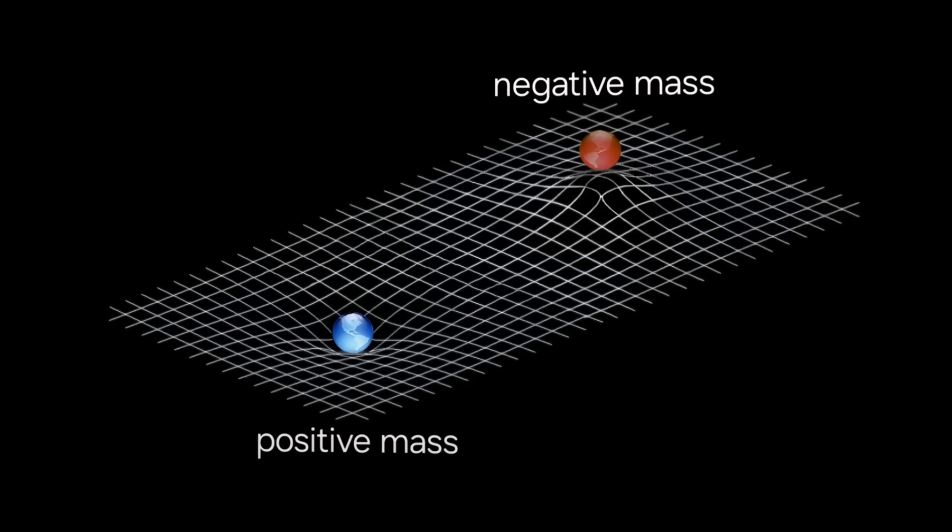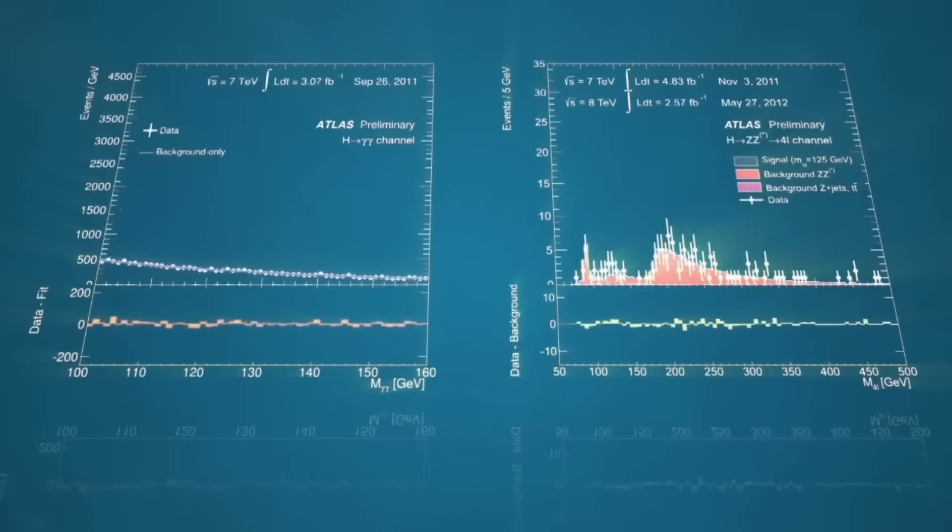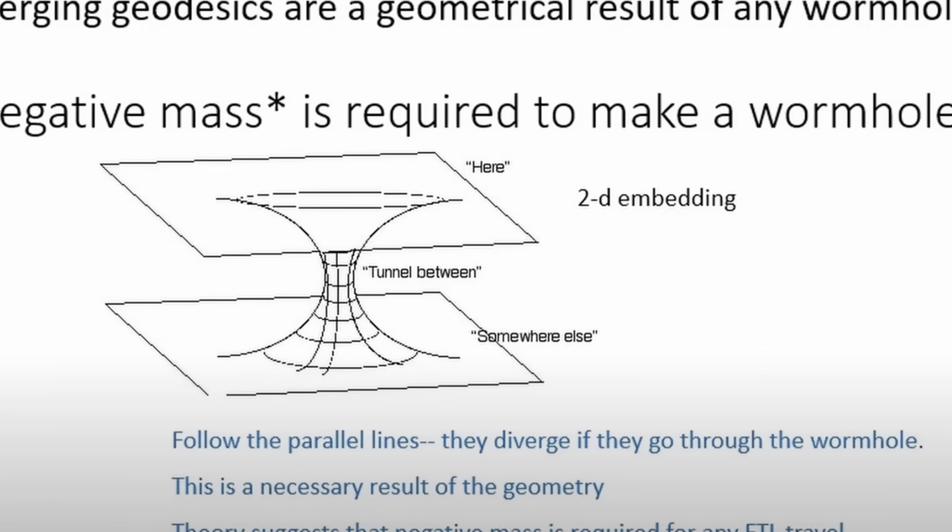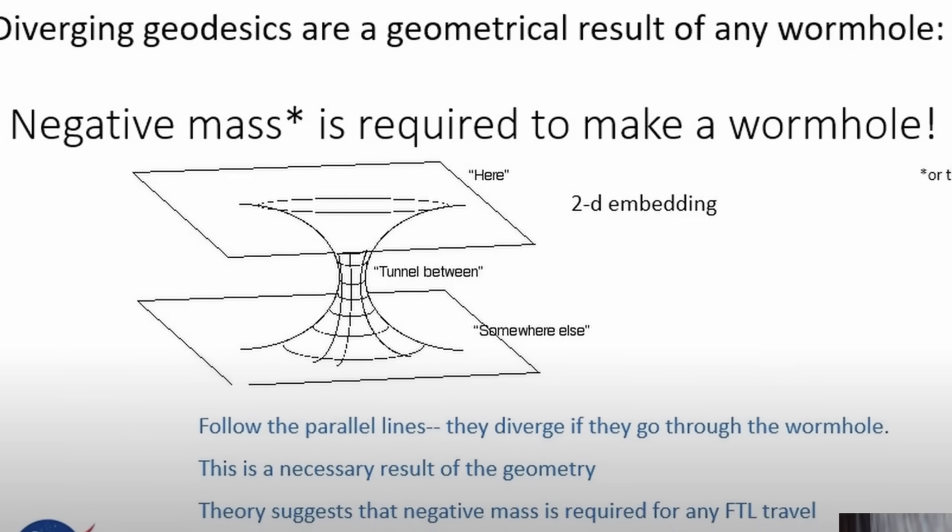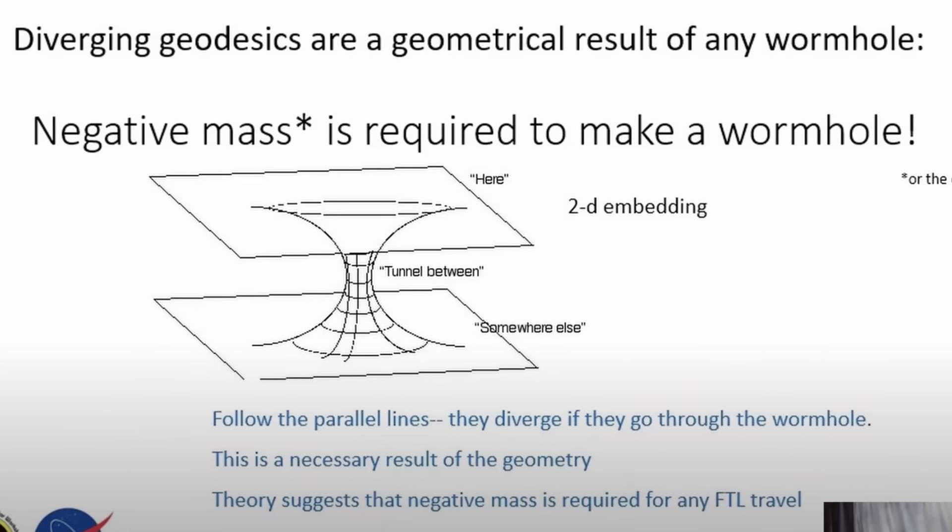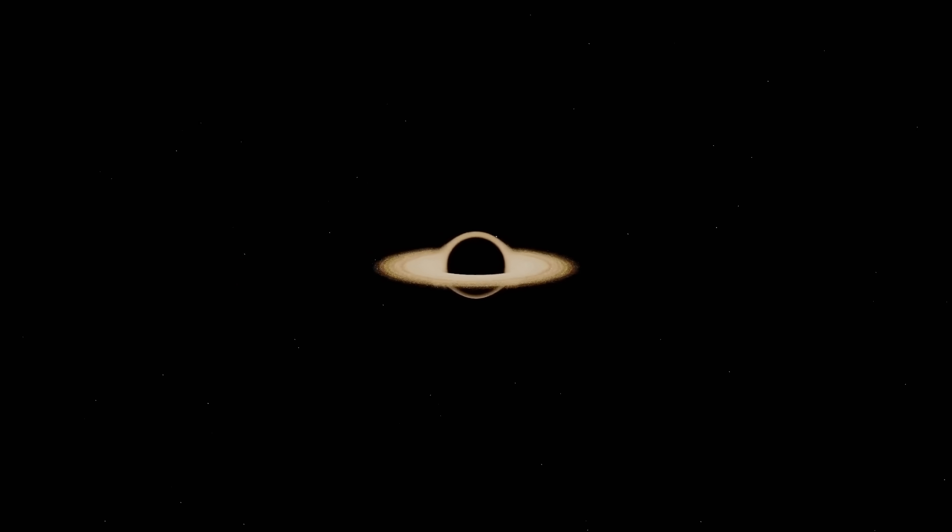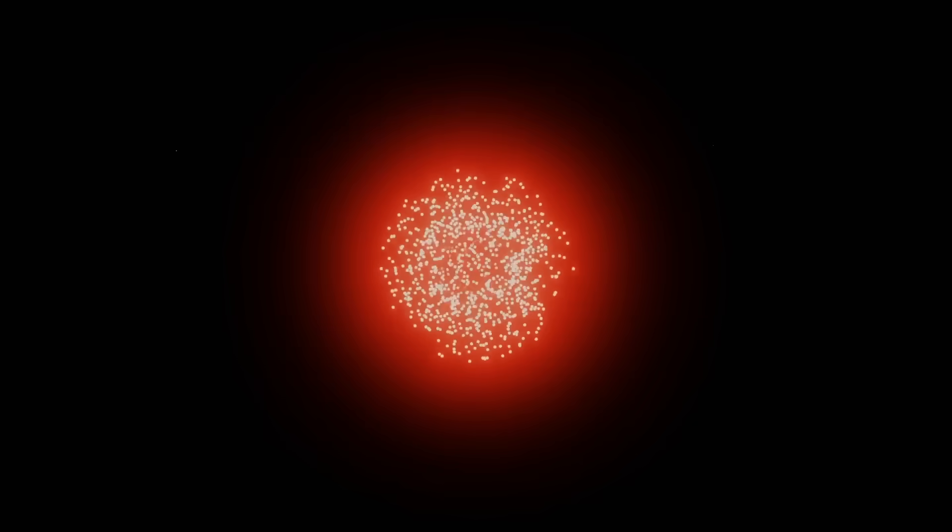While this wasn't true negative mass, it demonstrated that under specific quantum conditions, matter can behave as if it has negative inertial properties. The researchers were clear. This was an effect of internal spin-orbit coupling in the condensate, not actual negative mass particles. But it proved these behaviors can exist in our physical world, not just in theory.